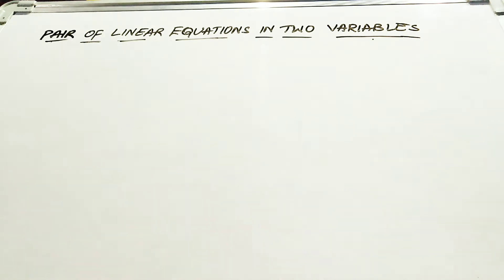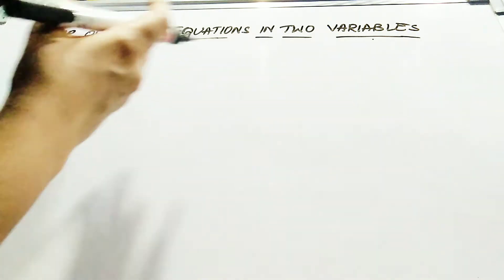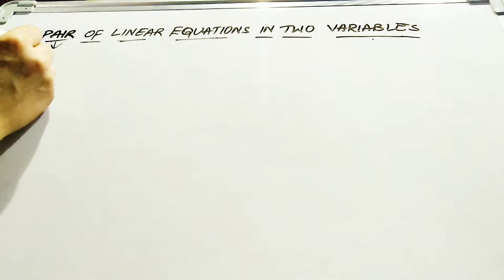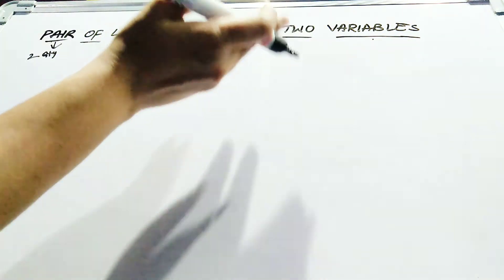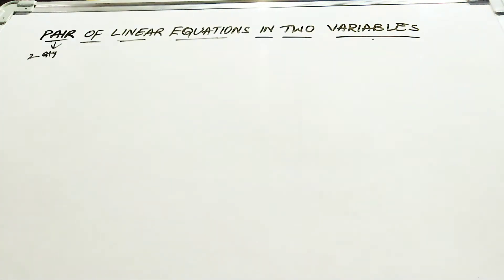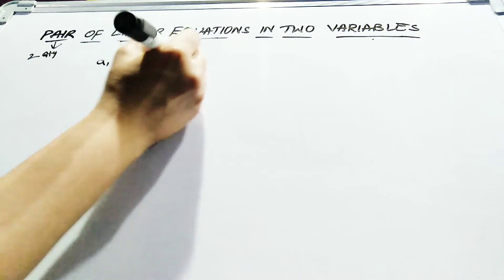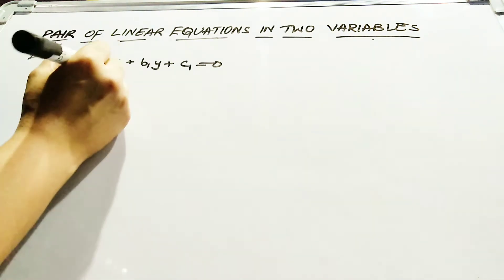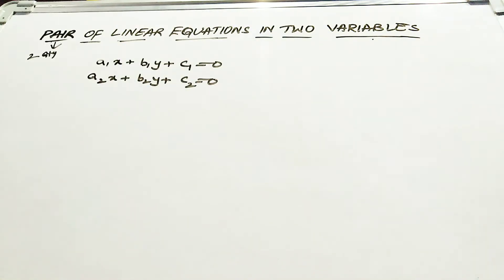In our previous videos we discussed linear equations in 2 variables: what a linear equation is, its general form, the conditions, and that it produces a straight line. Now we discuss the concept of a pair. A pair means two linear equations. You write: a1x plus b1y plus c1 equals 0, and a2x plus b2y plus c2 equals 0. This is the general form for writing a pair of linear equations in 2 variables.